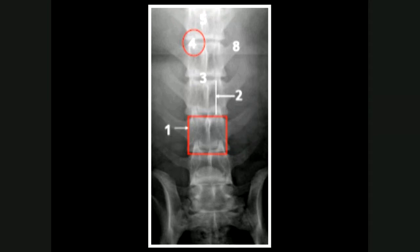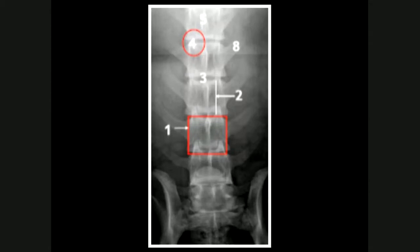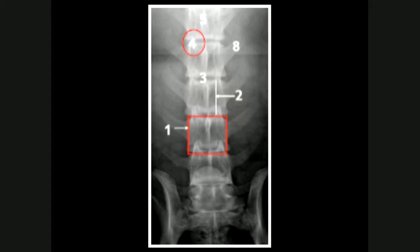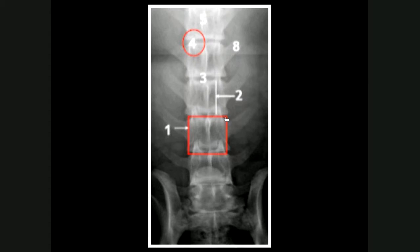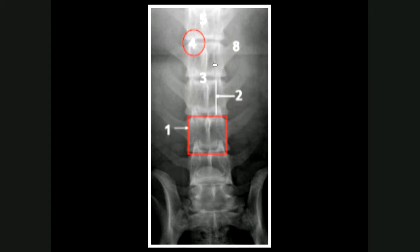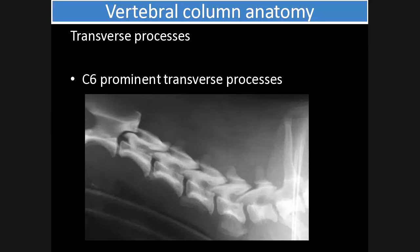In the last self-assessment slide, the answers are: number one is the vertebral body, number two is the pedicle — which is difficult to demonstrate on the VD because it's such a fine, thin, vertical bone forming the lateral margins of the vertebral canal. Number three is the intervertebral disc space, number four is the articulation process or joint, number five is the dorsal spinous process, and number eight is a transverse process.